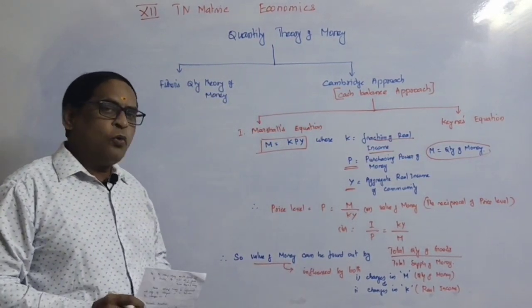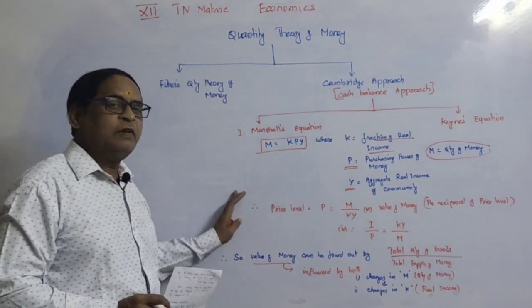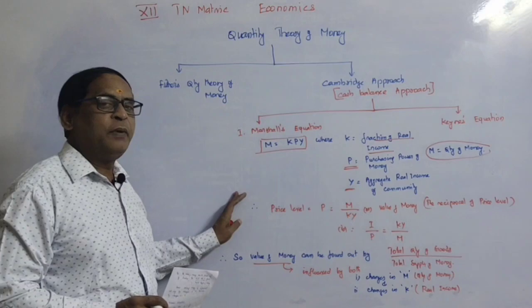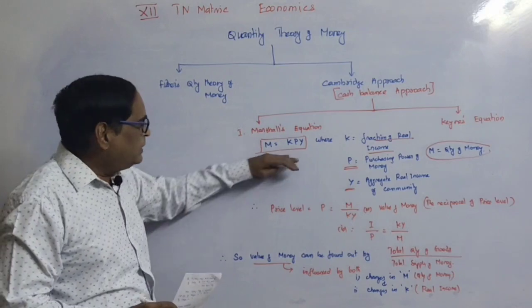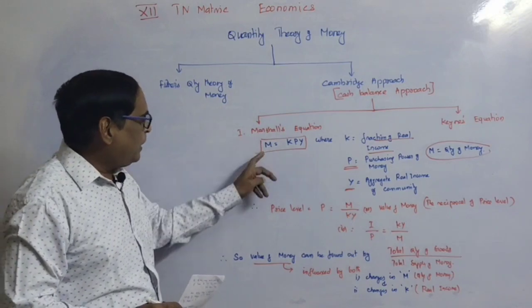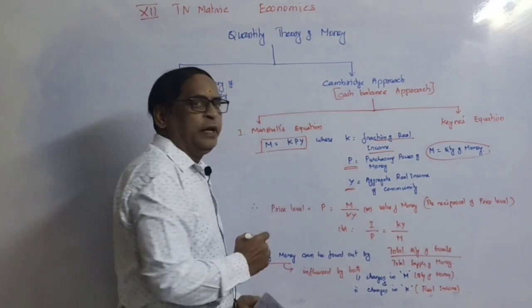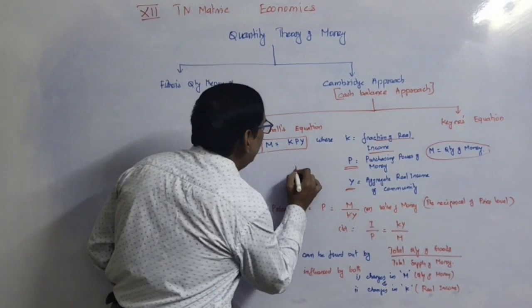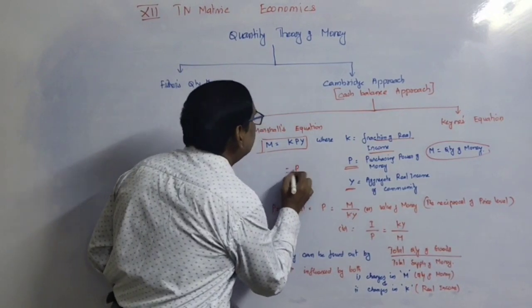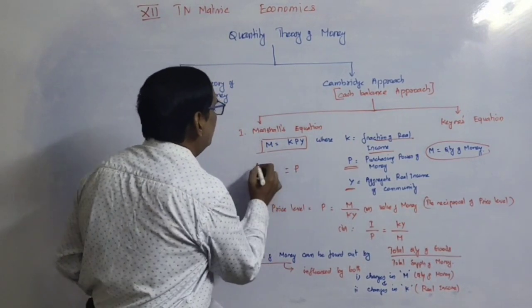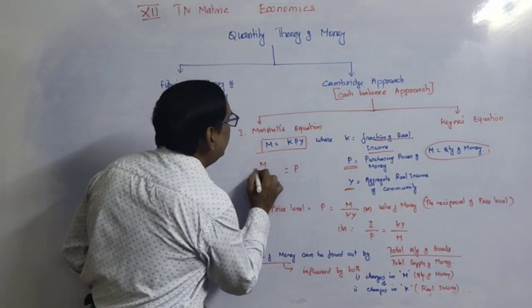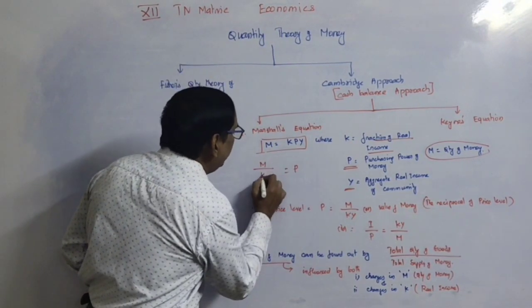How is the price level to be determined? M is equal to KPY. From this, price level is equal to M divided by KY.